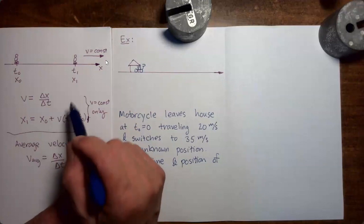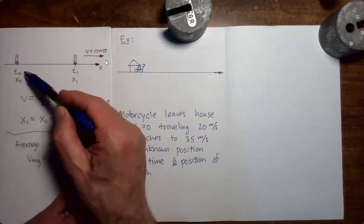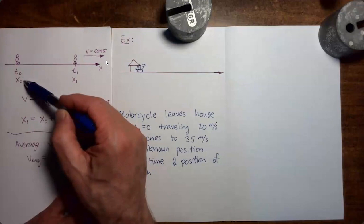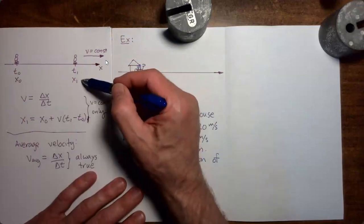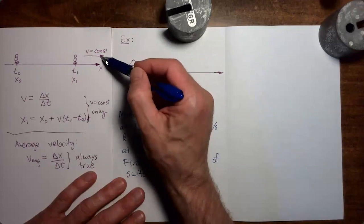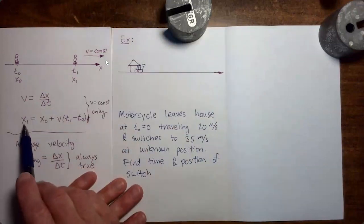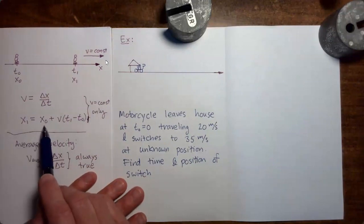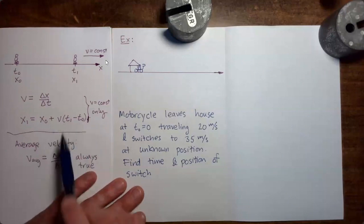Another way to describe that is like this. We say that at time t0, the position is x0. At time t1, the position is x1. We assume the person is moving with constant velocity. So we can then say that the position at the later time x1 equals the position at the earlier time x0 plus the velocity multiplied by the change in time.